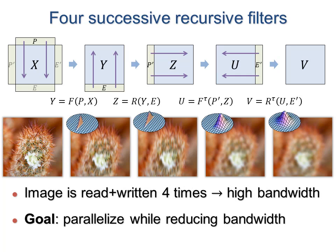For images, we typically have a causal-anticausal filter pair in each of the two dimensions. The problem is that computing the four filters in succession leads to high bandwidth to global memory. Our goal is to efficiently parallelize the computation while reducing bandwidth over the whole filter sequence.